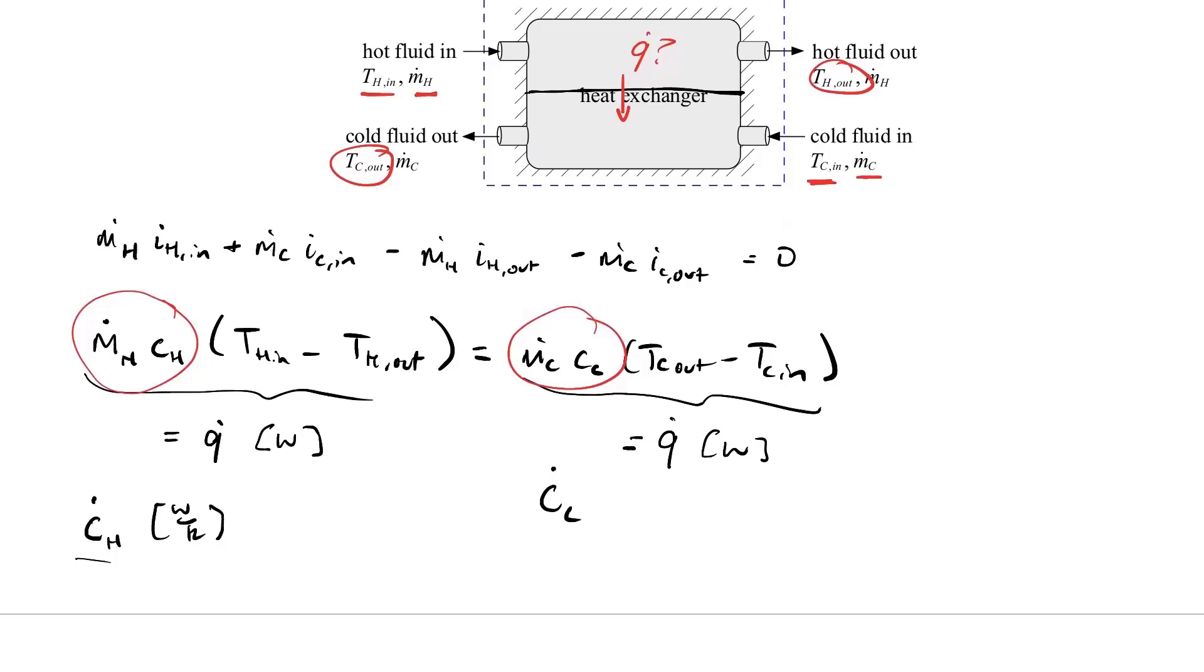If you look at this now, we have unknowns. We don't know T H out, we don't know T C out, and we don't know Q dot. But we have two equations. The left hand side equals Q and the right hand side equals Q. Two equations and three unknowns, that's not quite possible to solve. So we need to do a little bit more to figure out how to solve this.